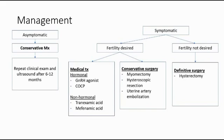For management of uterine fibroids, if the patient is asymptomatic, we can do conservative management by repeating clinical examination and ultrasound after 6 to 12 months. If the patient is symptomatic, we do the management based on whether they still want to have children in future. If fertility is still desired, we can either do medical treatment or conservative surgery.